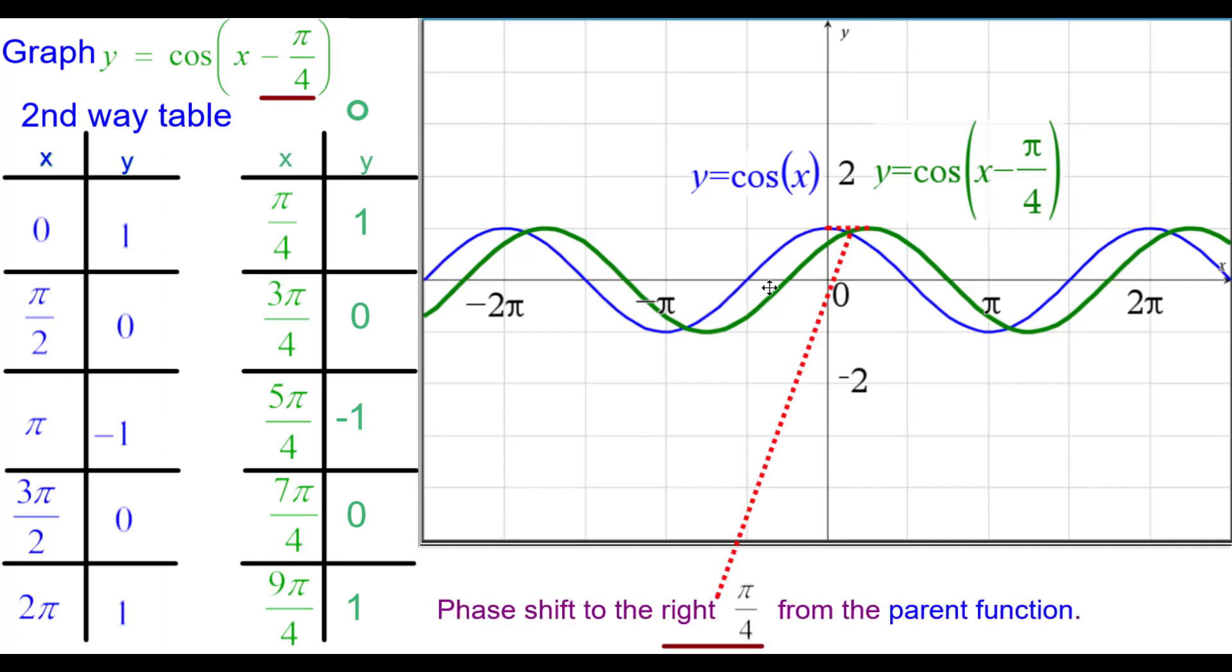We call this a phase shift to the right pi over 4 instead of a horizontal shift. When we do sines and cosine, we call it a phase shift.